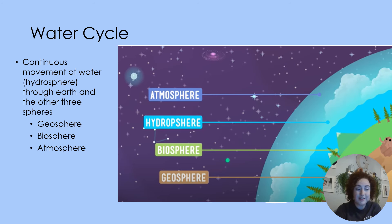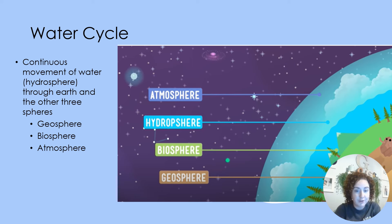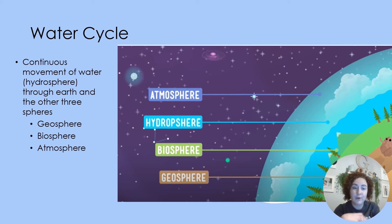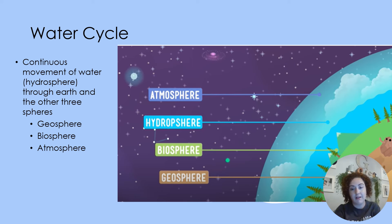So for whole group, this is like the only slide I'm going to talk on. The water cycle itself is just the continuous movement of water, or our hydrosphere, throughout Earth and how it interacts with the other three spheres. The water cycle interacts with the geosphere, or our actual planet itself and the rocks; it interacts with our biosphere, or all the living things amongst our planet; and then finally, it also interacts heavily with our atmosphere, or the air around us.